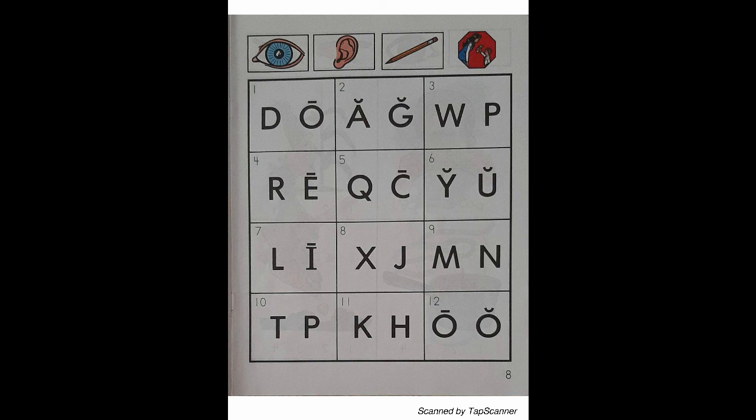Look at the letter in box 9. Listen as I say the sound of the letter. M — Mule — M. With your pencil, circle the letter that reads M.